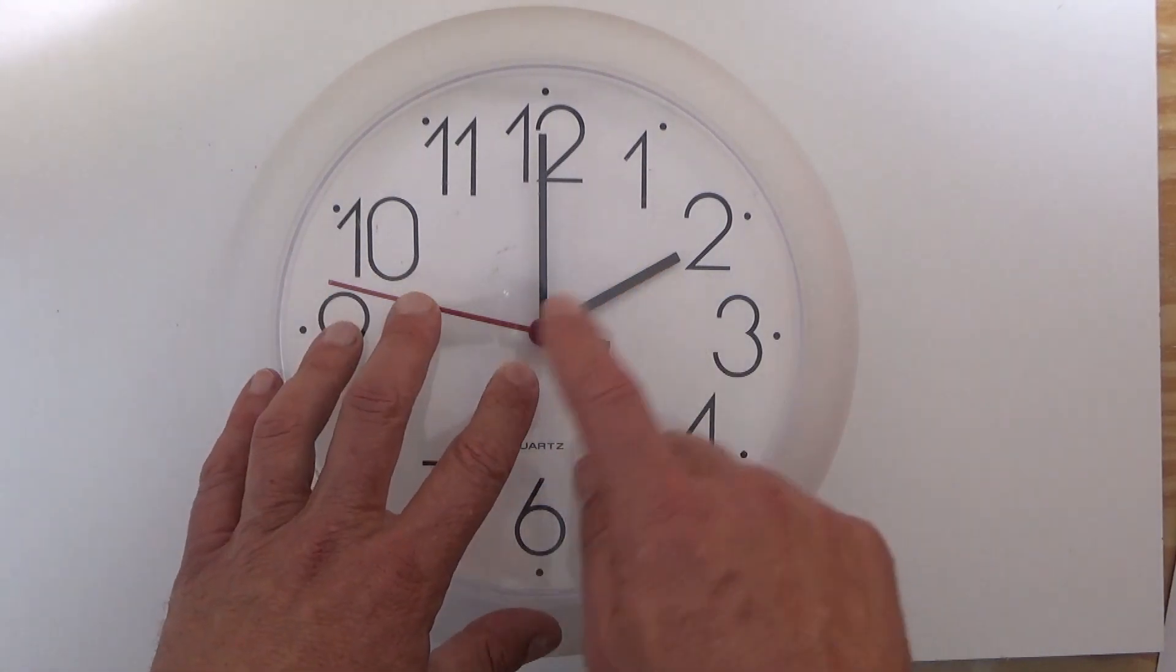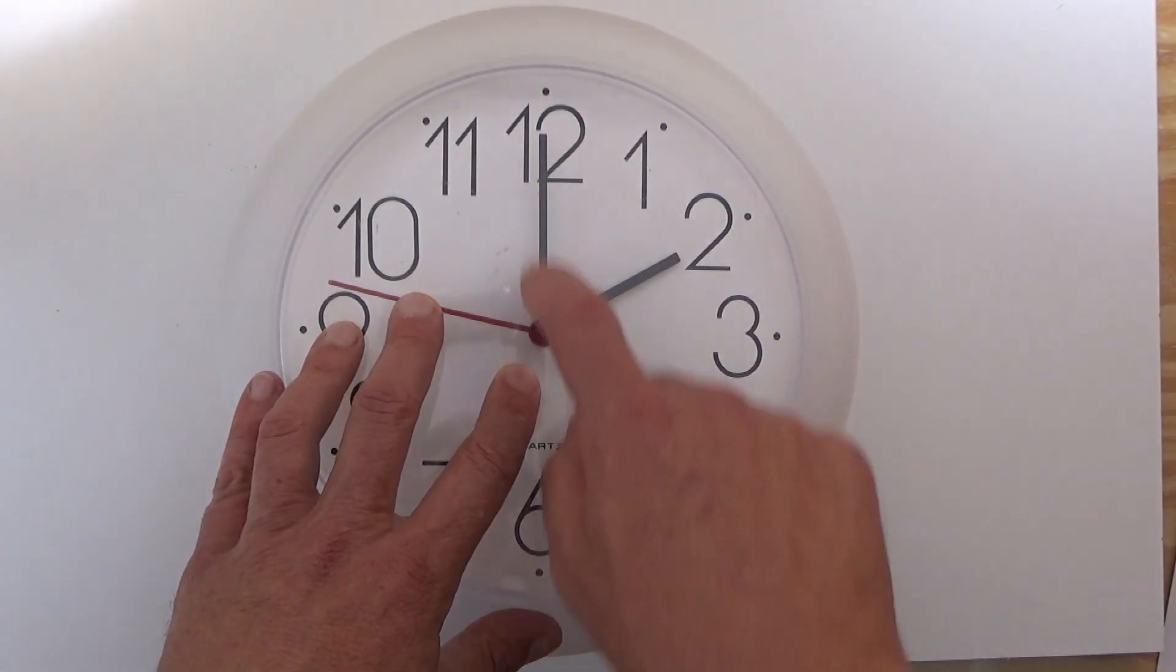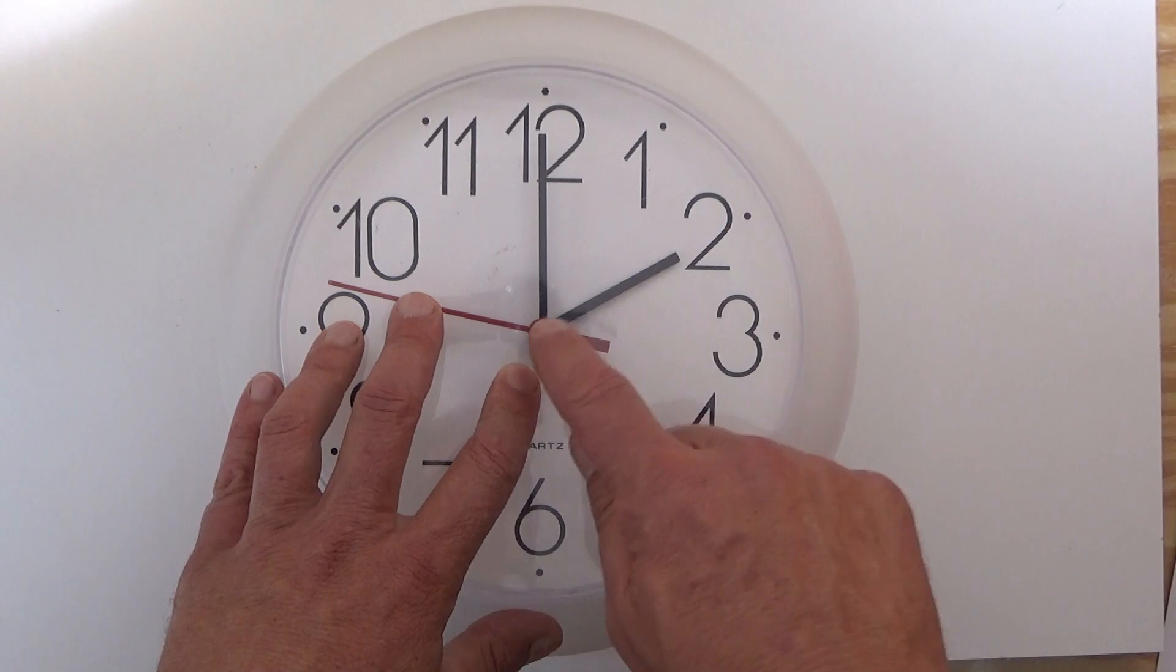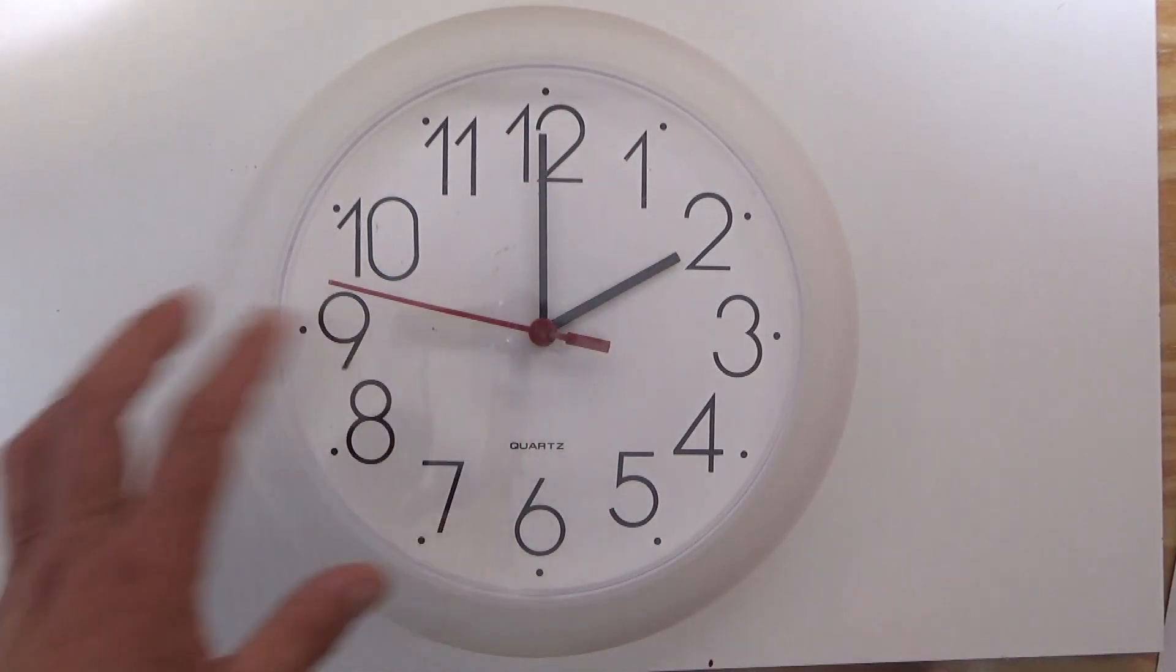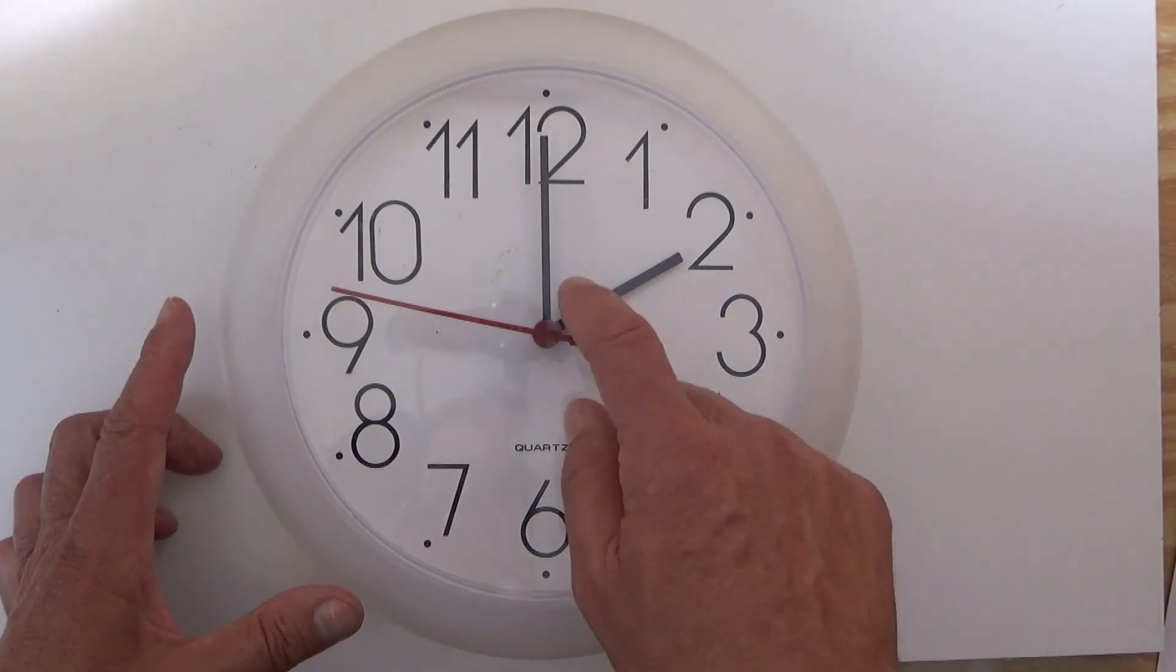Two o'clock is good because the minute hand is exactly on the 12 and the hour hand is exactly on the 2, so you know that will be exactly 60 degrees at exactly 2 o'clock.